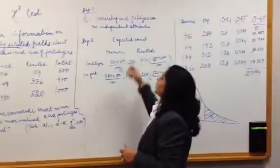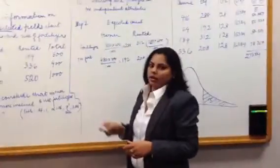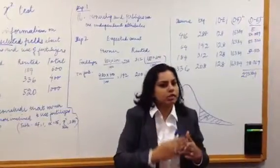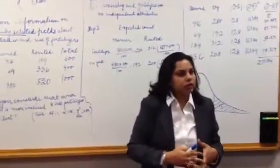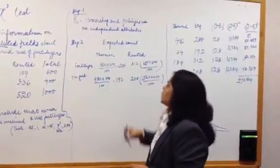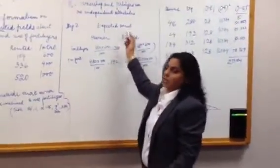The next step is calculation of the expected count because we have to see whether there is any discrepancy existing between the observed count of the sample as well as the expected count of the sample. How do we calculate this expected count?